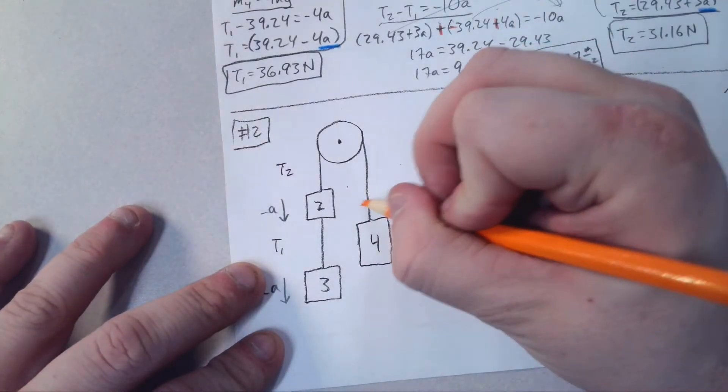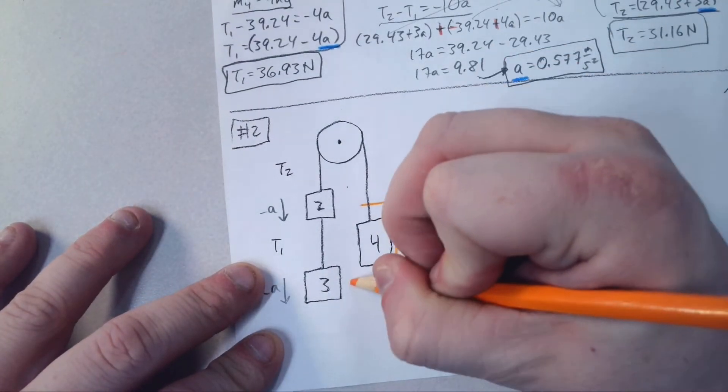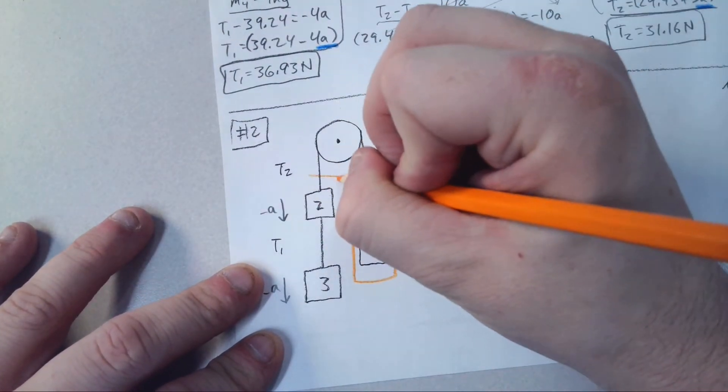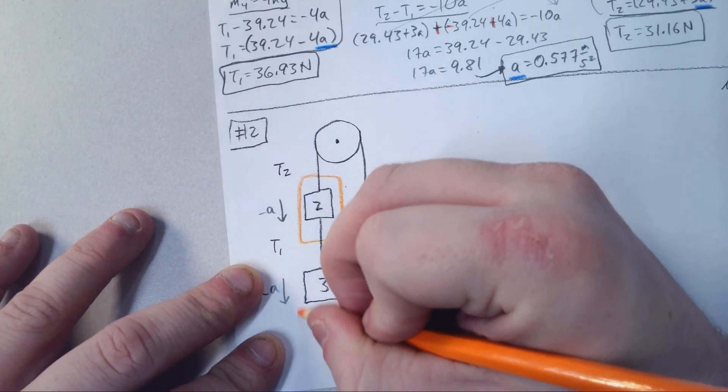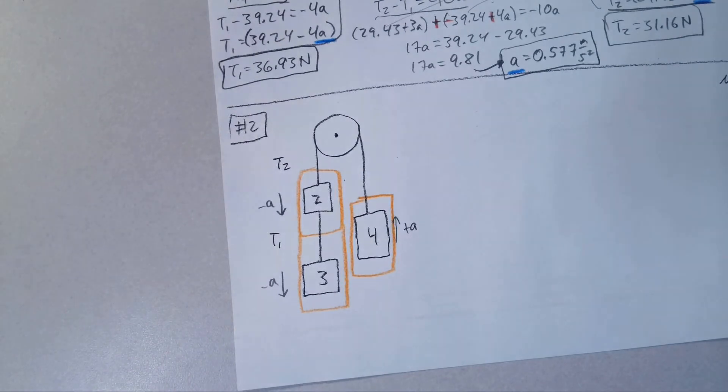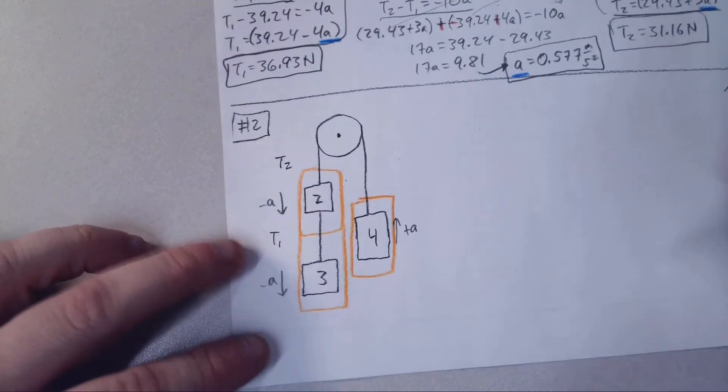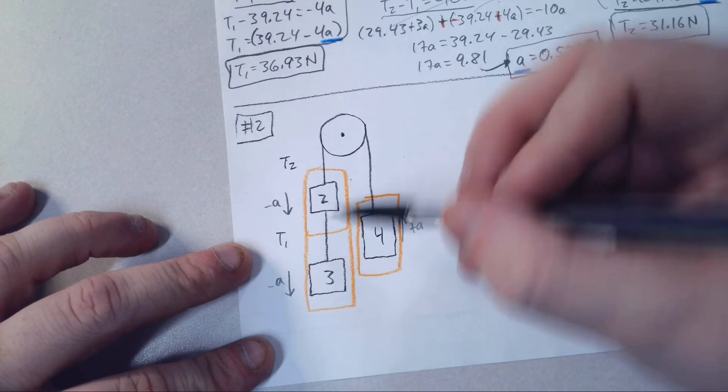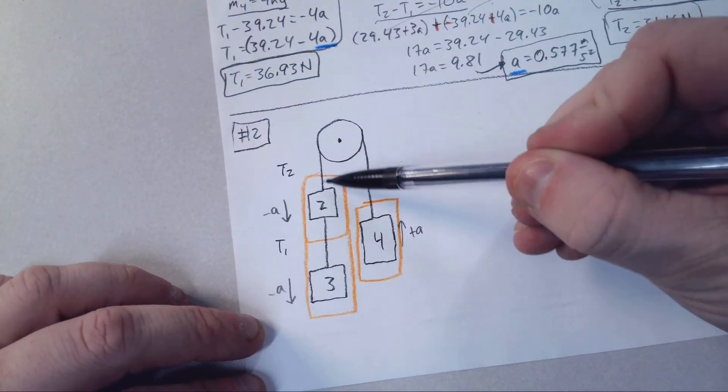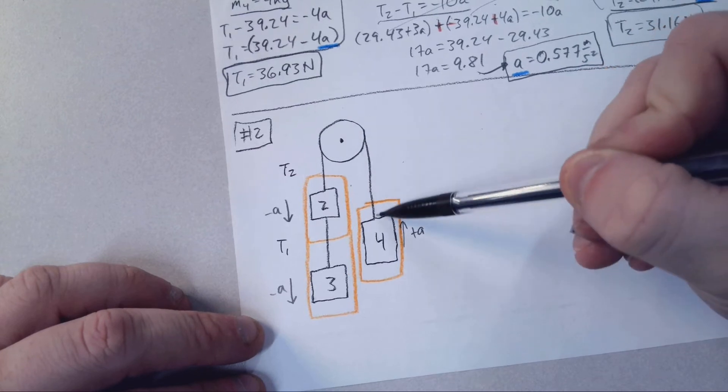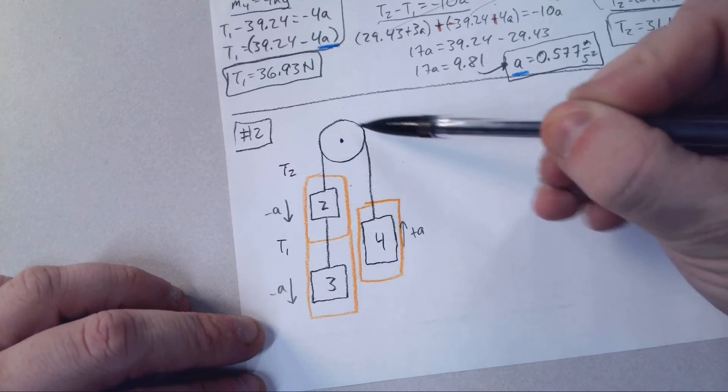Next thing, we'll draw our little boxes to isolate our masses. We'll go ahead and look at number four. I'm calling this T1. We have to realize the cable wraps all the way around, and so this tension there is the same tension there.